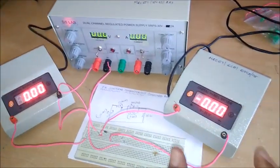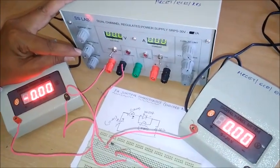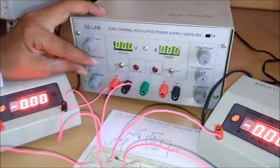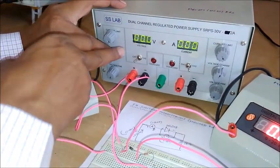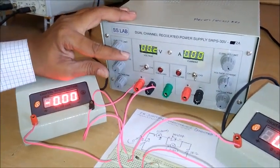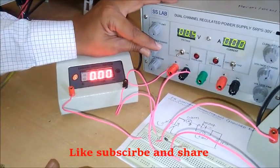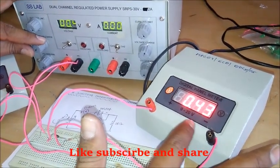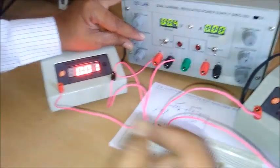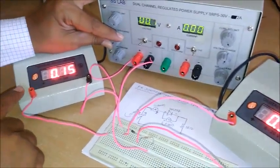Observe the readings on the ammeter as well as the voltmeter. Initially, when we slowly increase the voltage, the current will always show zero while the voltage increases. Now I am increasing the voltage — you can see the voltmeter reading is increasing but the ammeter reading is zero. On further increase, there is a small increase in the ammeter, meaning we have crossed the cutoff voltage. After that, both the voltmeter and ammeter readings will increase.